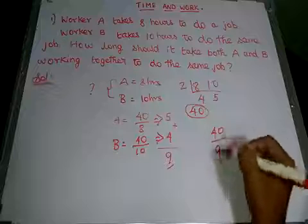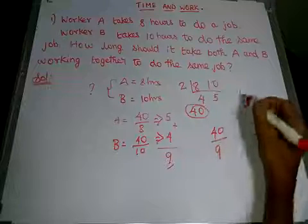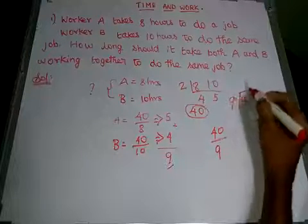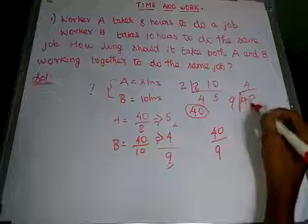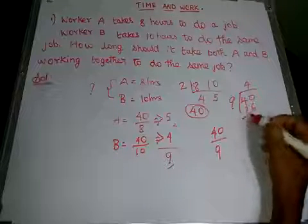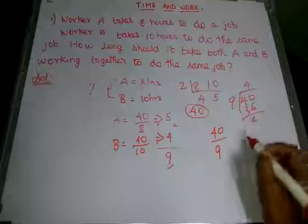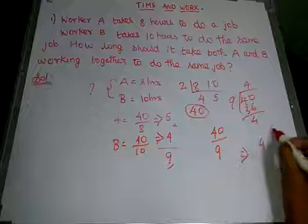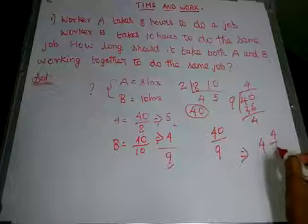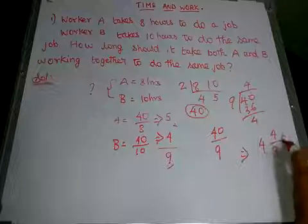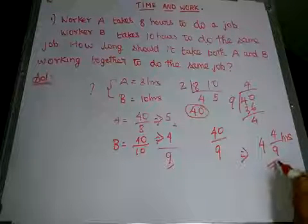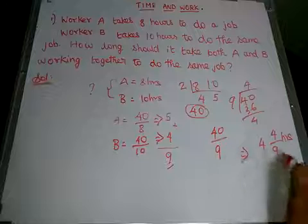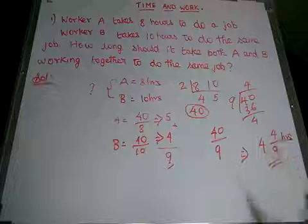This is the answer. When you convert 40/9 into a mixed fraction, 4 times 9 is 36, and the remainder is 4. So the answer is 4 and 4/9 hours. They can complete the job together in 4 and 4/9 hours.